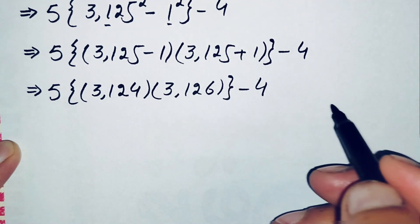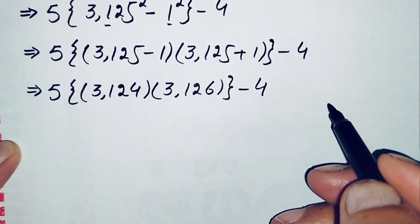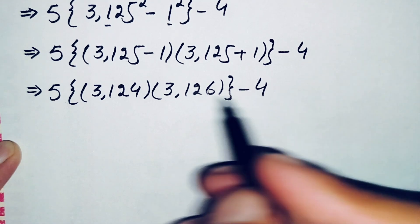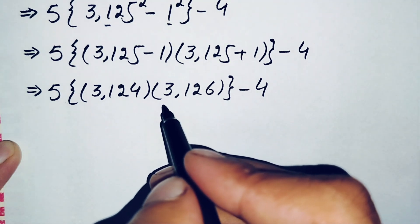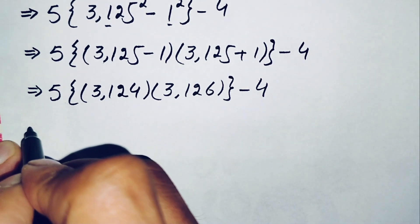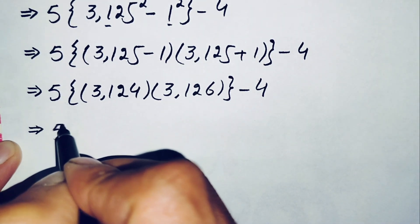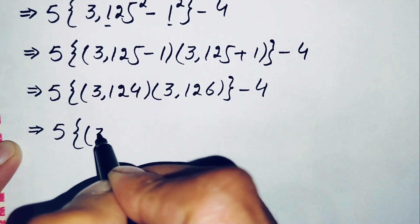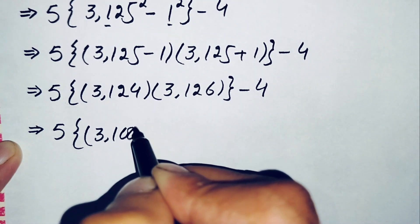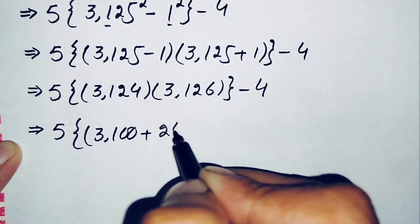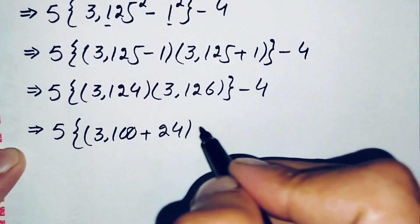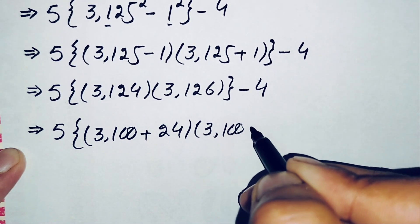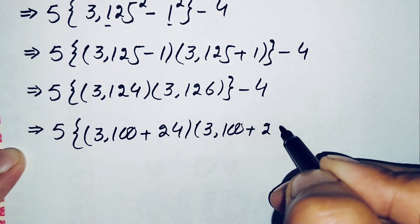Here we will multiply these two numbers without rough work. So we will rewrite 3124 as 3100 plus 24, and 3126 as 3100 plus 26.